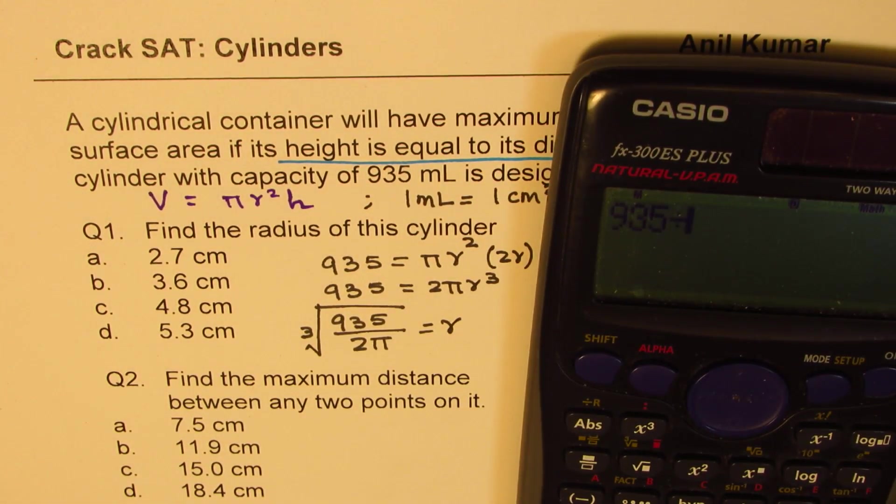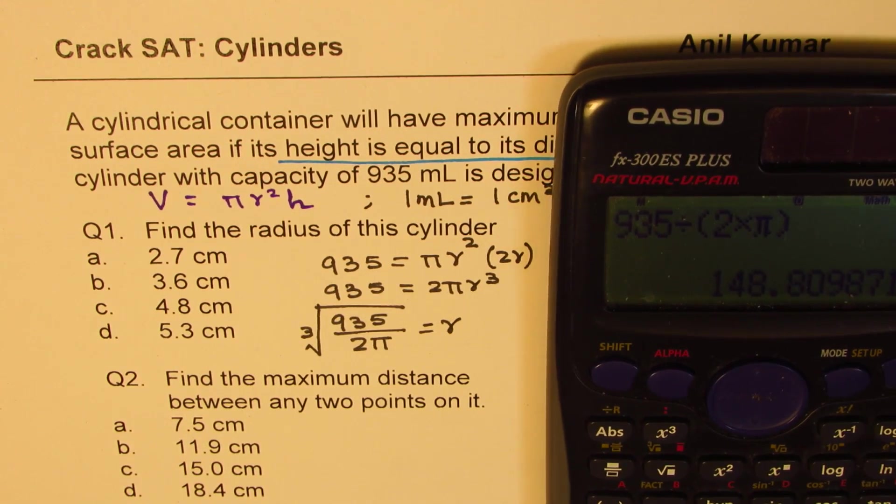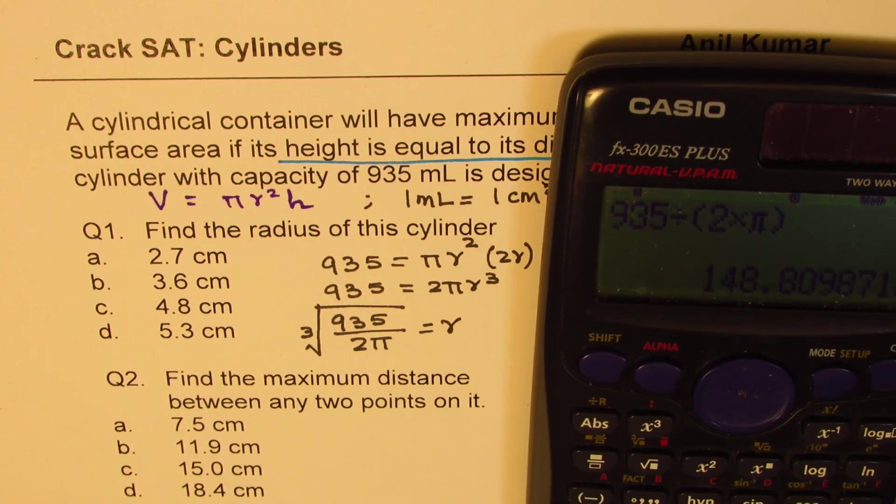935 divided by, within brackets, 2 times pi, bracket close, and then this is 148.8. We'll do cube root of this. So we'll do shift cube root of our answer.